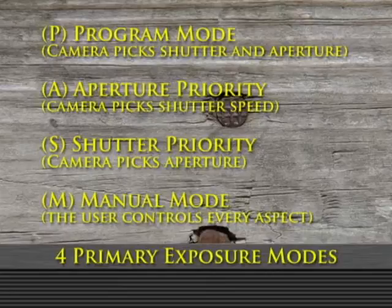Aperture priority is the mode I use most of the time. I set the aperture — the f-stop value — and the camera picks a shutter speed to allow a proper exposure. Sometimes you may need to adjust the ASA value to get good enough values for a proper exposure. Check the light meter in your camera as you work, and we'll cover that in greater depth in a future episode.